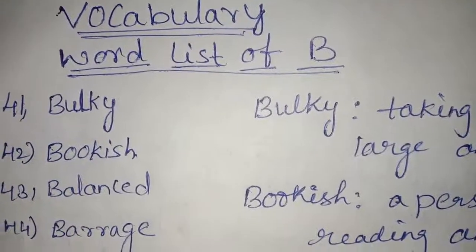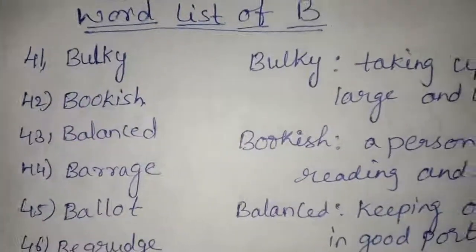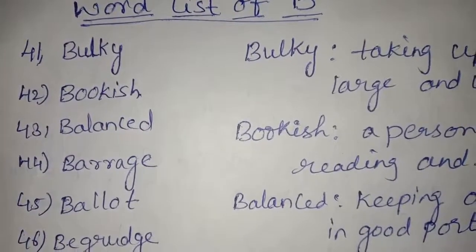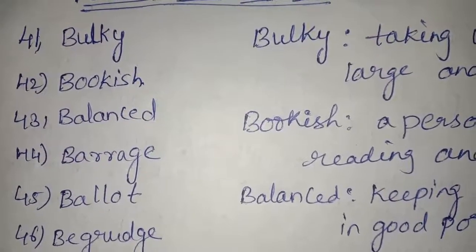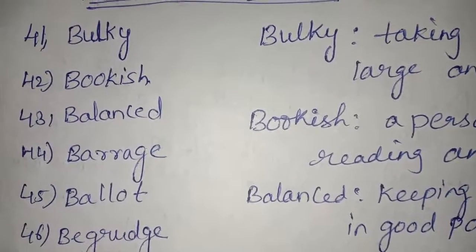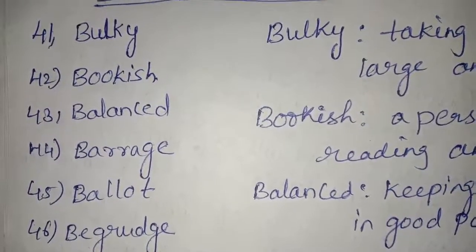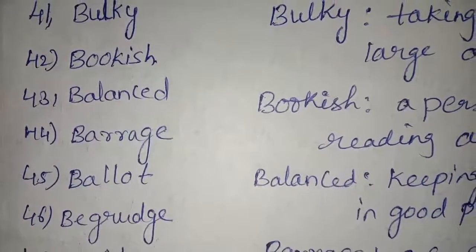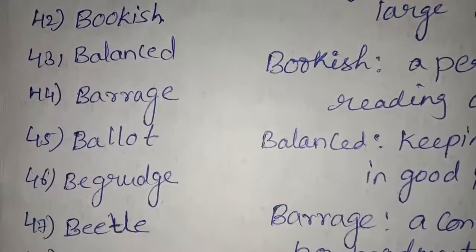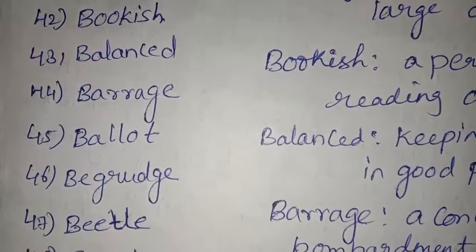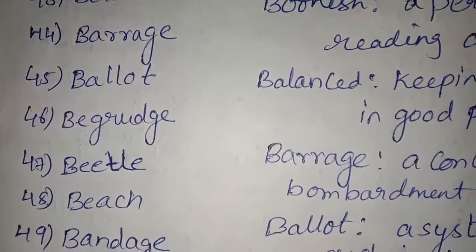Word list of B. Total 40 words we have completed. Now we are going to learn 10 more words to make 50. First one: Bulky — B-U-L-K-Y. Next: Bookish — B-O-O-K-I-S-H. Balanced — B-A-L-A-N-C-E-D. Barrage — B-A-R-R-A-G-E. Ballot — B-A-L-L-O-T. Begrudge — B-E-G-R-U-D-G-E.